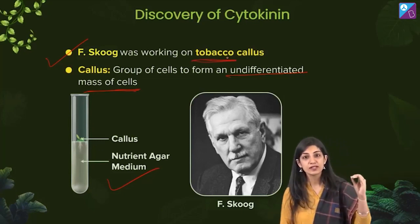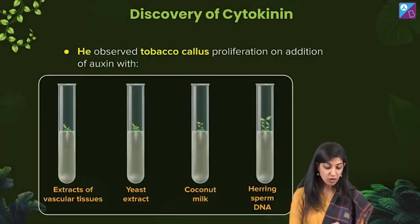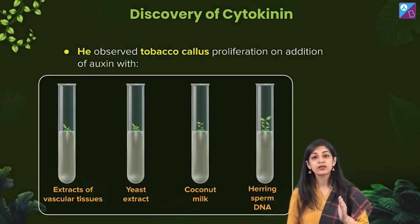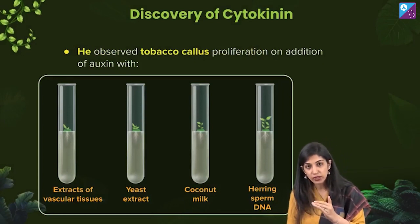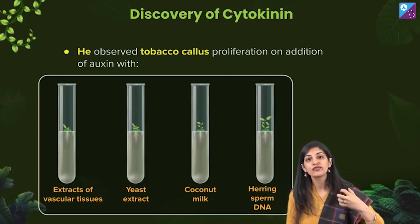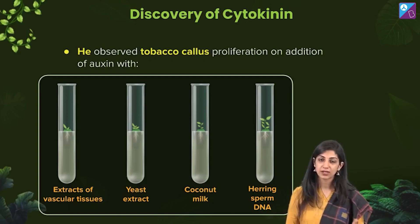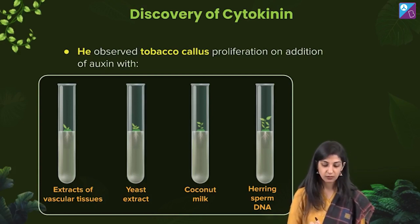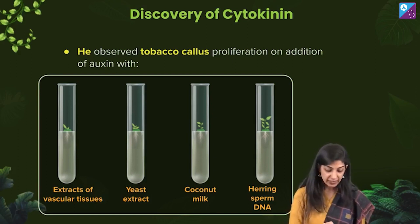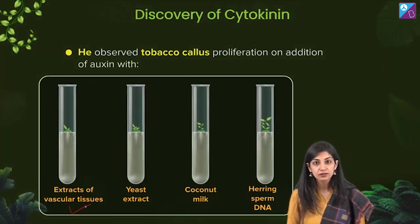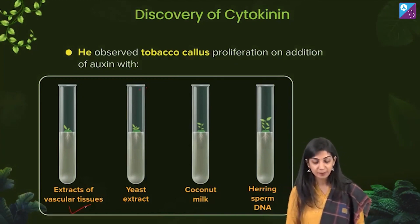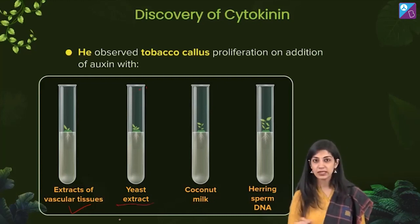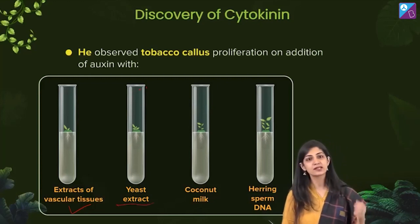In this nutrient medium, he tried to add substances which would cause the growth or proliferation of cells in the callus. He took extracts of vascular tissue in one experiment. In the next one, he took yeast extract.